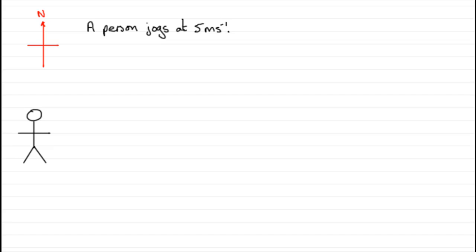But suppose our jogger was to jog at 5 meters per second in a particular direction, say, to the east. Then I'm giving you a quantity that involves both magnitude, the 5 meters per second,